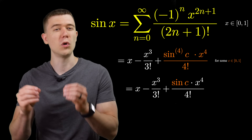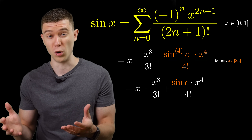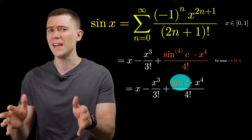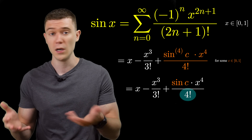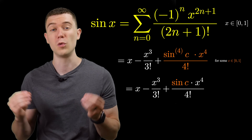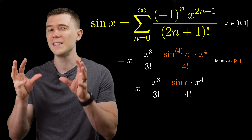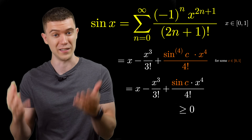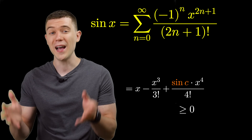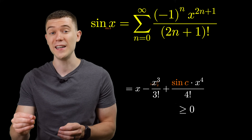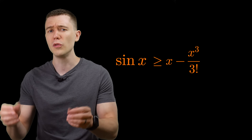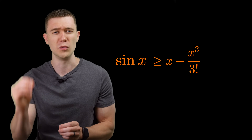Since we're only considering values of c between 0 and 1, and sine x is positive on that interval, that sine term is positive. 4 factorial is positive, and x to the fourth power is also positive. Thus this entire remainder term is greater than or equal to 0, so we can ignore it via an inequality. What we have is: sine x is greater than or equal to x minus x cubed over 3 factorial, for x on 0 to 1.